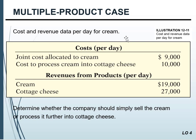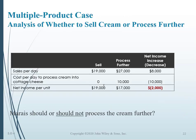Let's look at the cream example. The joint cost is $9,000. Processing the cream into cottage cheese costs an additional $10,000. Revenue per day from cream is $19,000, and from cottage cheese is $27,000. Putting these side by side: the difference in sales from processing further is $8,000, but the cost of further production is $10,000. The net effect is we would lose $2,000. Therefore, do not further process the cream into cottage cheese.